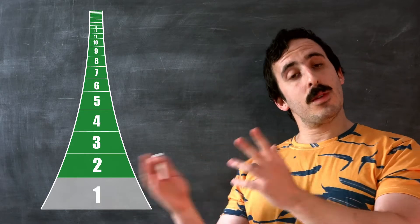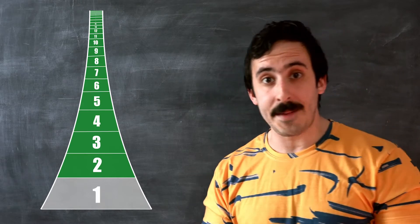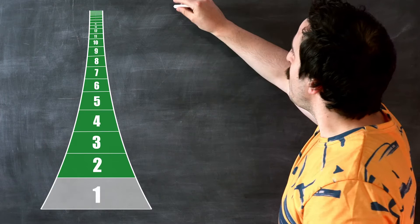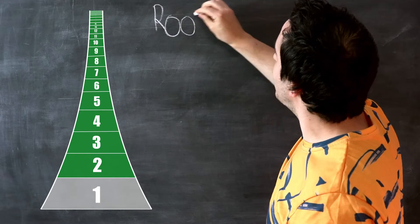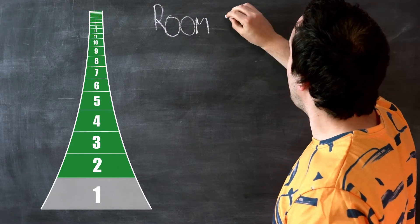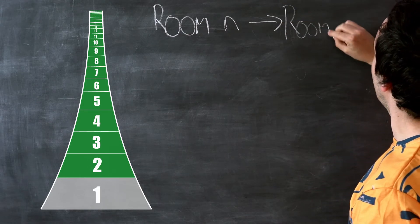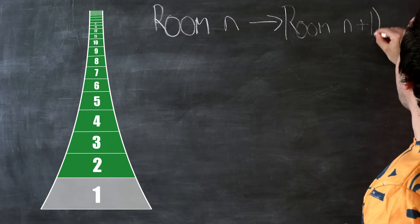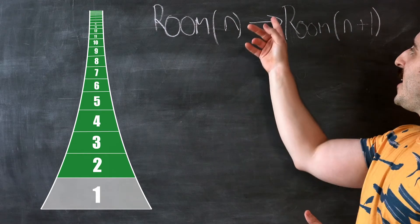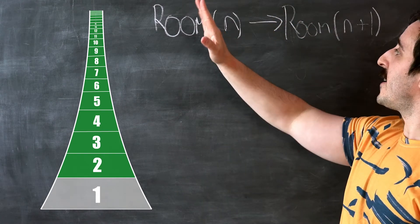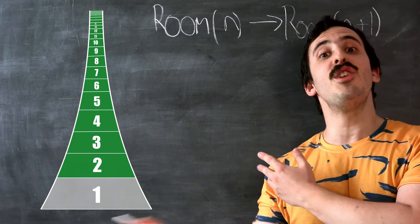What will be helpful now — and this will come up in later parts of the video — is to write this in a more formal mathematical way. The manager is doing an operation: the person in room n is moving to room n plus one. Here n is any natural number, and the operation says the guest in room n moves to room n plus one. By this operation, the manager can always make room for a new guest.